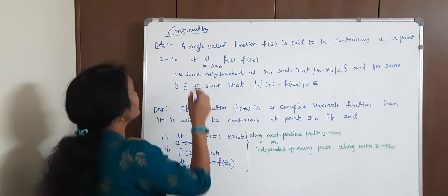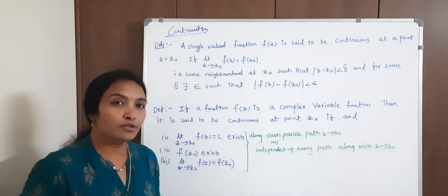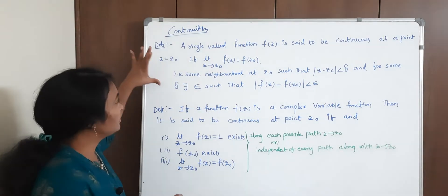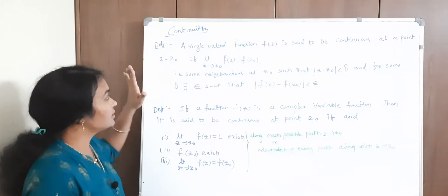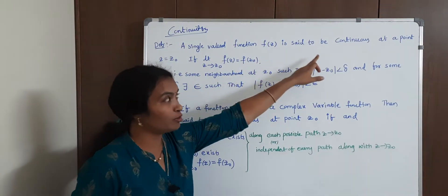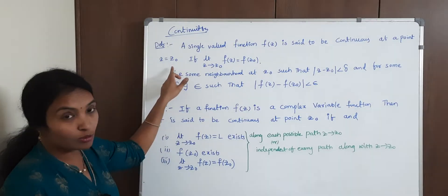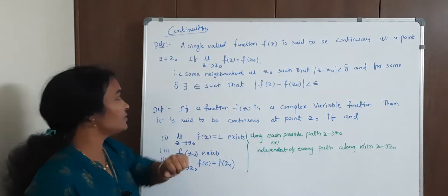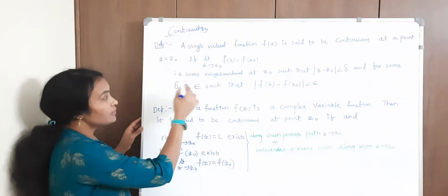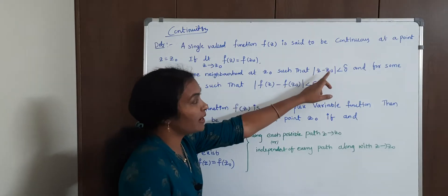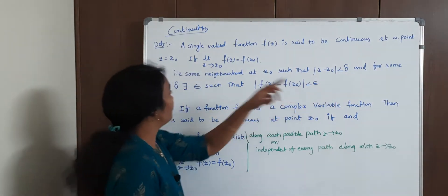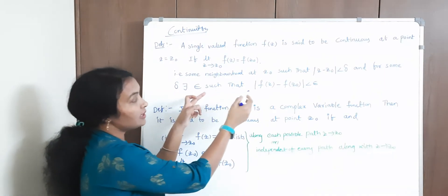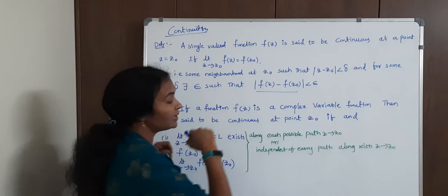What is the continuity of the function? A single valued function f of z is said to be continuous at a point z equal to z naught, if limit z tends to z naught f of z is equal to f of z naught. And in some neighborhood at z naught such that z minus z naught is less than delta, and for all some delta there exists a small epsilon such that this must be less than epsilon.